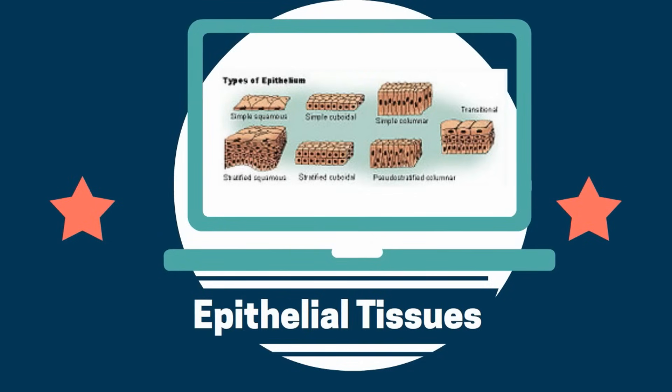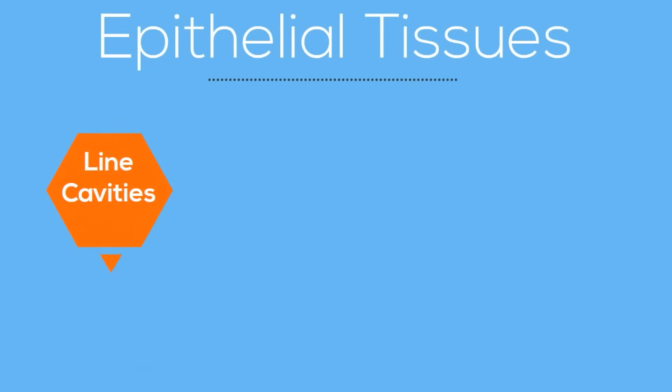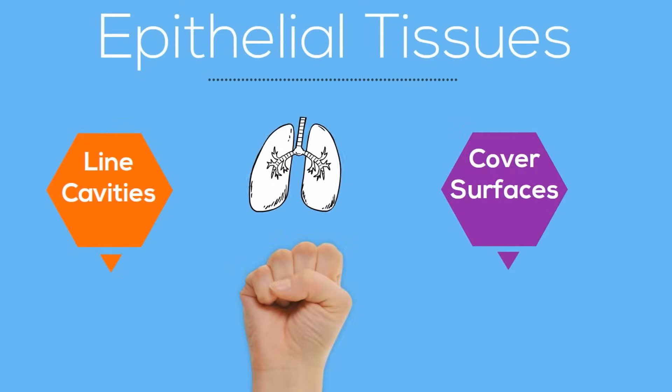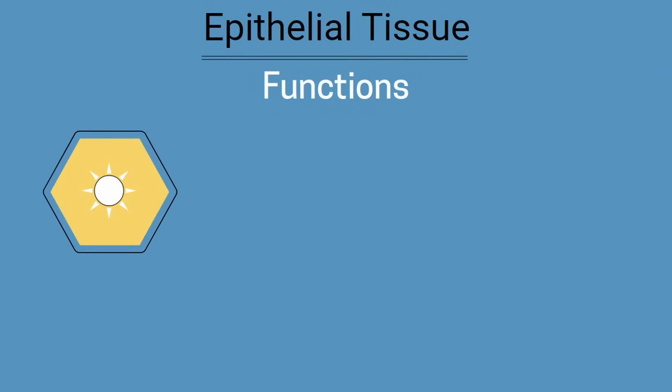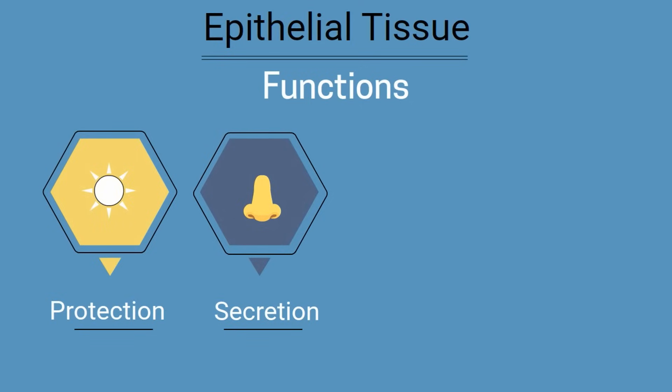Our body is made up of several different types of tissue. Epithelial tissues line cavities and cover surfaces of vessels and organs. They provide several important functions: first is protection from sunlight and pathogens; next they are involved in secretion of sweat, hormones, and mucus.